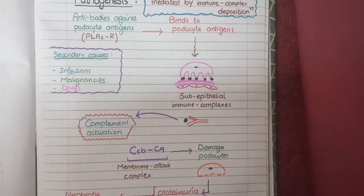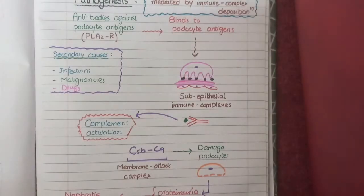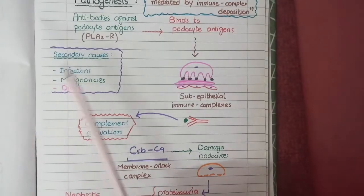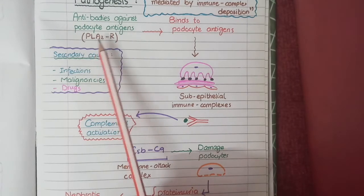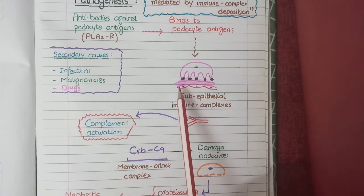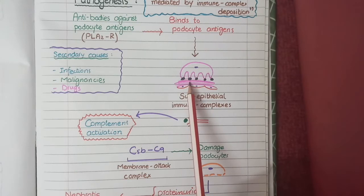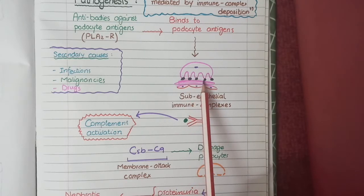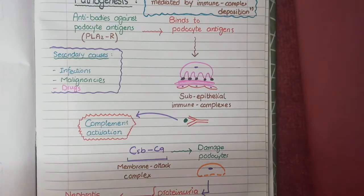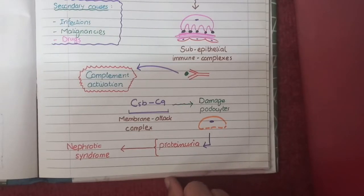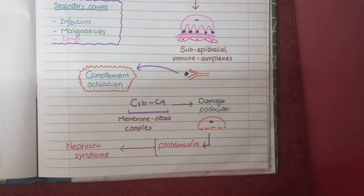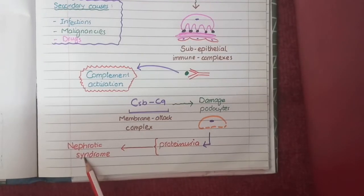To review the pathogenesis: in membranous nephropathy, autoantibodies develop against podocyte antigens. These antibodies bind to the antigens, forming immune complexes that bind to the glomerular basement membrane at a sub-epithelial location, resulting in complement activation. The membrane attack complex then causes damage to podocytes, leading to proteinuria and nephrotic syndrome.